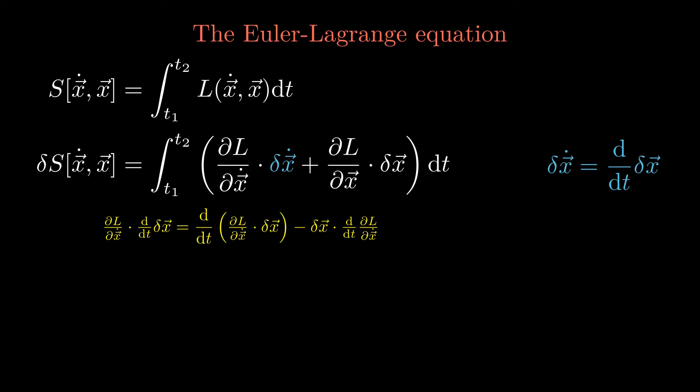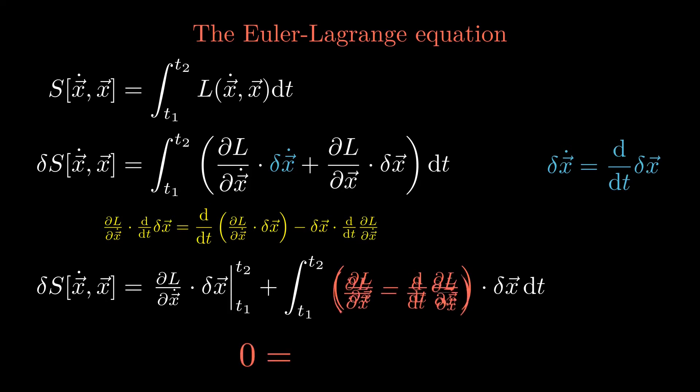By virtue of Stokes' theorem, a boundary term arises which is zero, however, since the perturbations have to vanish at the initial and final point of time. The initial and final state are supposed to be the same for all trajectories. If we want to achieve that the variation of the action vanishes for all possible perturbations delta x, the Lagrangian has to fulfill the following condition.